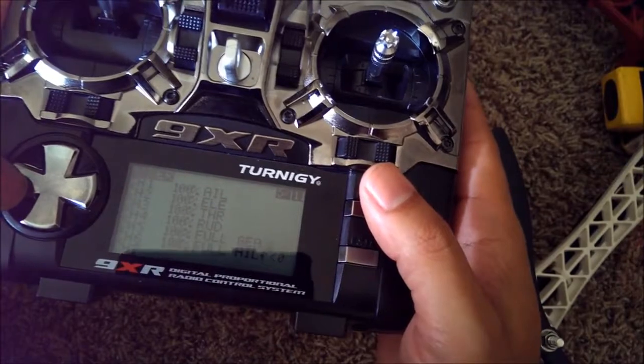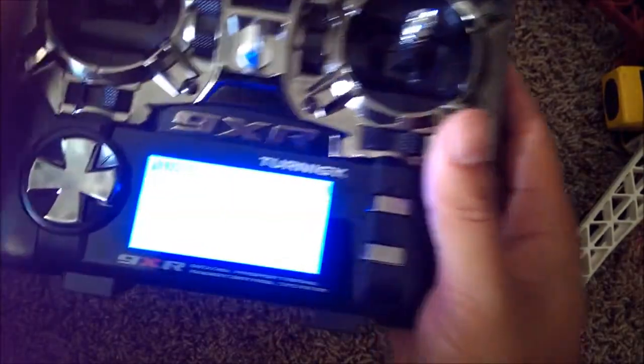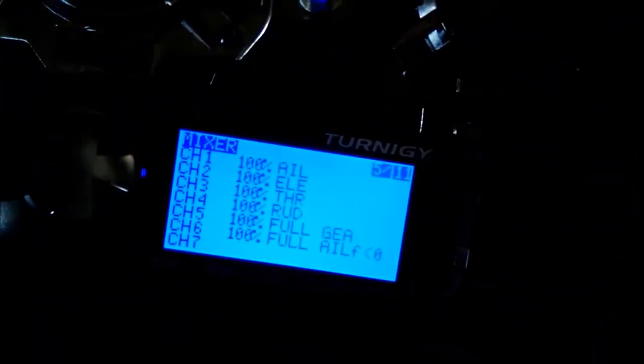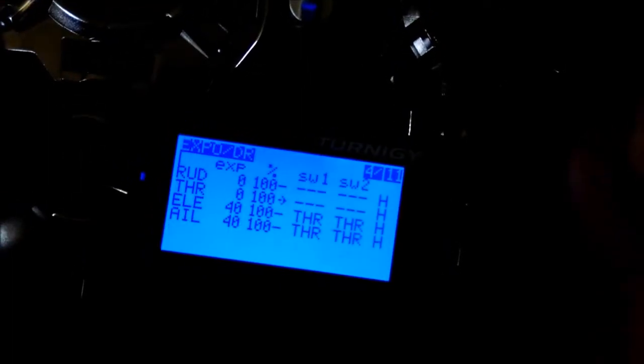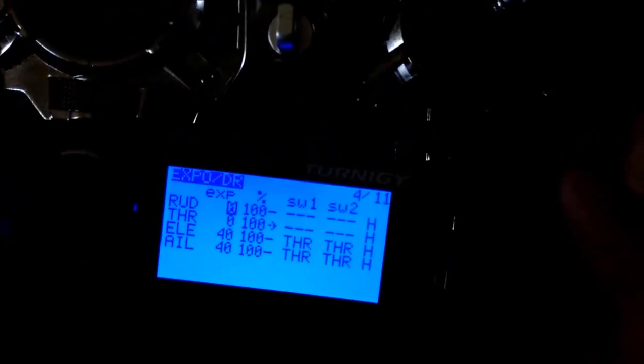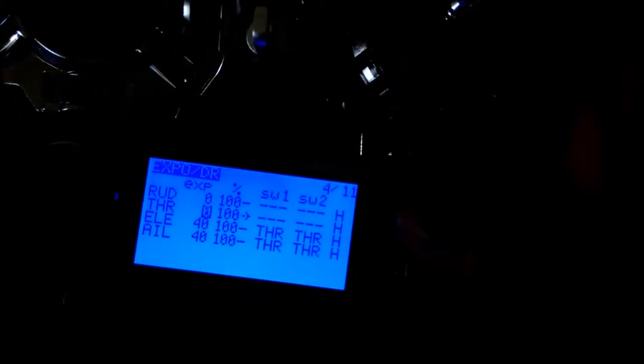So to actually do Expo for the throttle... I wonder if you can see this better. So we're in the Expo menu. Menu 4 of 11. Go down to Throttle. Hold Menu.